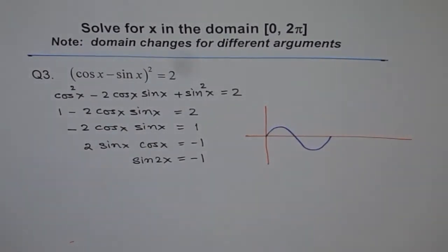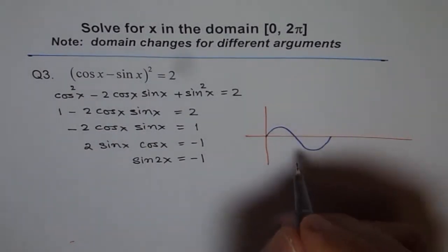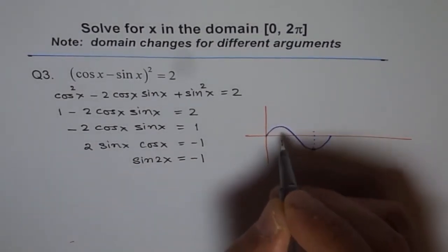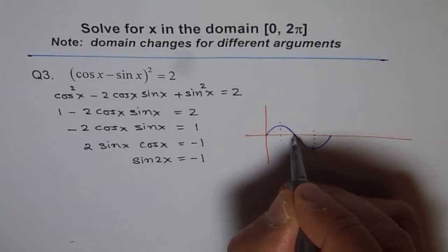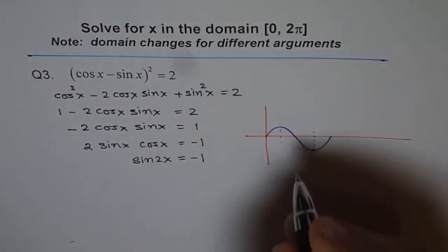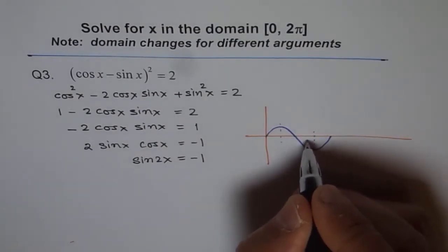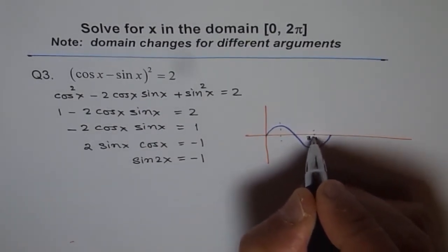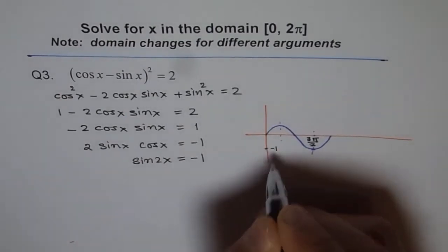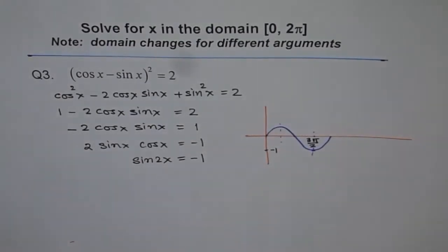We know the sin function is kind of like this, and it has -1 only at one point. This is π/2, 2π/2, 3π/2. So that is the value 3π/2. Let me write here 3π/2. So at that point we have -1. We do have one answer here.